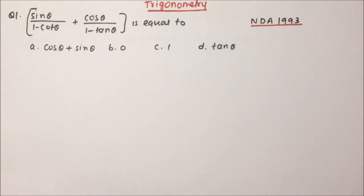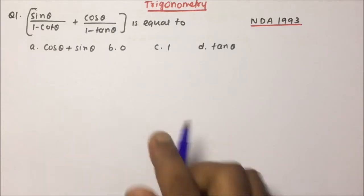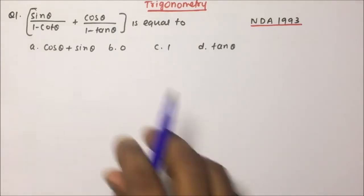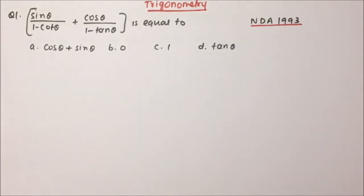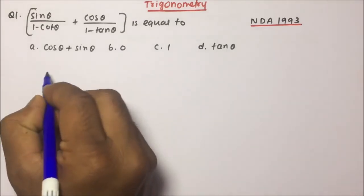So friends, we have to calculate the value of sin θ divided by (1 − cos θ) plus cos θ divided by (1 − tan θ).